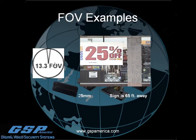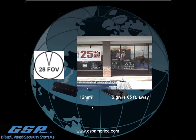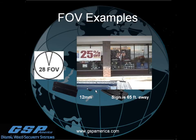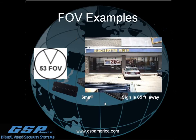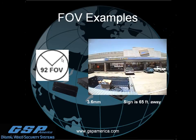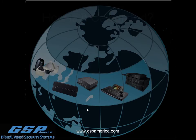Here's a visual example. A 25mm lens gives a 13.3 degree field of view with a sign 65 feet away. Moving to a 12mm lens widens the view with the sign still 65 feet away. At 6mm we get a 53 degree field of view, sign still at 65 feet. And a 3.6mm lens gives a 92 degree field of view, again with the sign 65 feet away — showing how dramatically the lens affects the view.